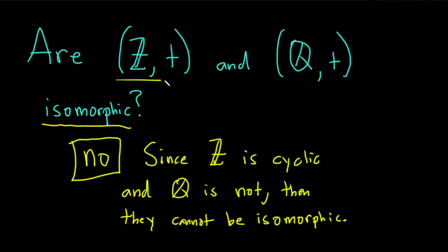Because this is a cyclic group, you have an isomorphism between these two groups, that implies that this one's also cyclic. But wait, oh no, it's not cyclic. So game over.